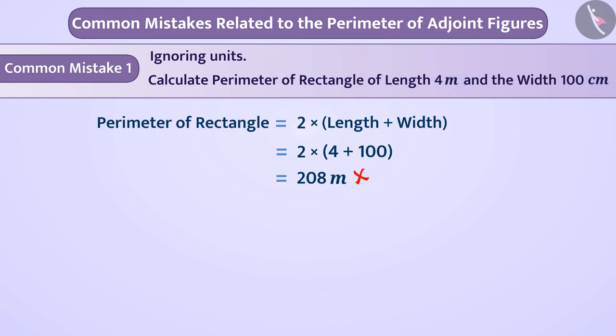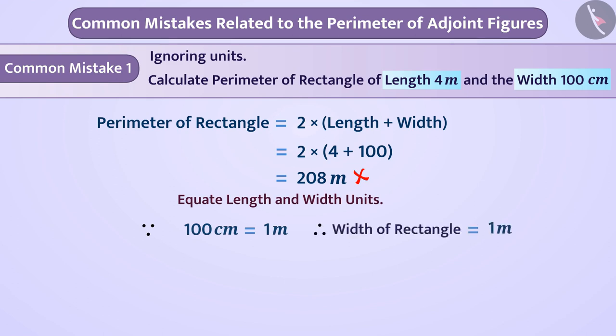For example, here the length of the rectangle is in meter and width is in centimeter. So, first we should equate length and width units. Since 100 centimeter is equal to 1 meter, the width of the rectangle is 1 meter. Thus, the perimeter of rectangle is 2 multiplied by 4 plus 1 that is 10 meter. This type of mistake can be avoided by reading the question carefully.